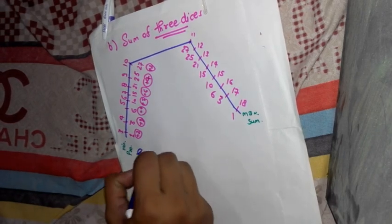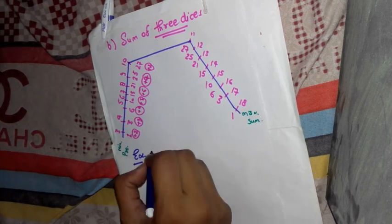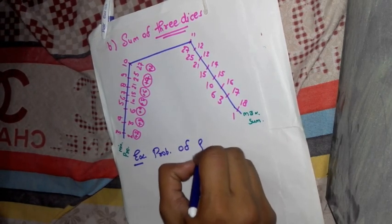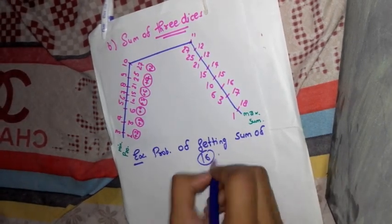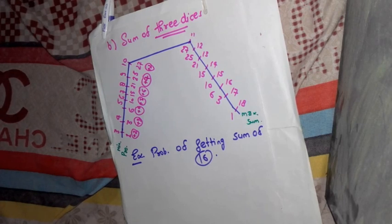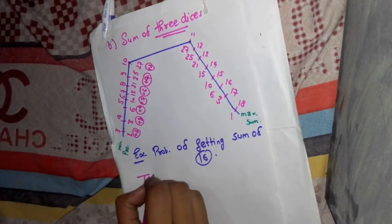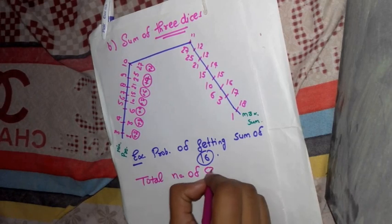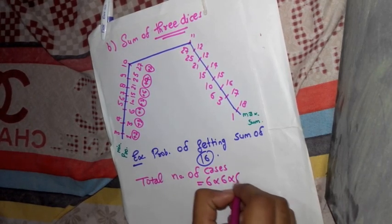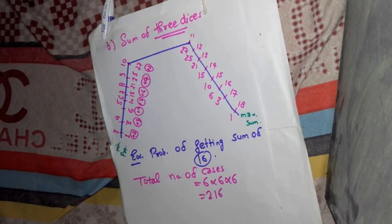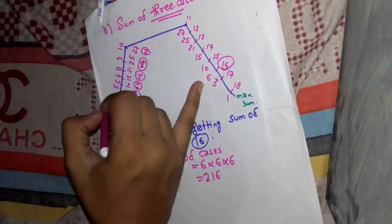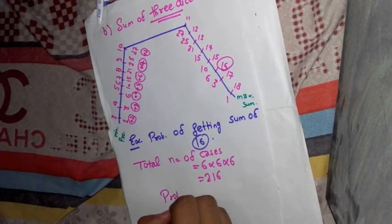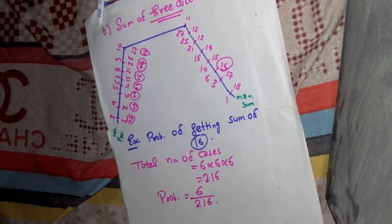Example: probability of getting sum of 16. In that, total number of cases are 6 into 6 into 6, that is 216. To getting the sum 16, what is the probability? 16 is here, then the probability is 6. Probability is 6 by 216. It is quite simple.